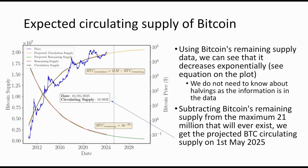Now we go to the expected circulating supply of Bitcoin. Using regression analysis on the Bitcoin remaining supply data, we can find the equation that describes the Bitcoin remaining supply, and we can see that it decreases exponentially. We do not need to know about the halvings, as that information is already embedded in the data. Subtracting the Bitcoin remaining supply from 21 million — the total number of Bitcoin we expect to ever mine — we can get the Bitcoin circulating supply at the period we are interested in, which for us is the 1st of May 2025.